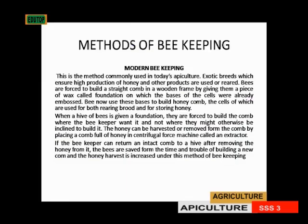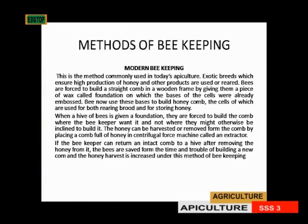In contrast, the traditional method requires no conditioning — bees are simply left in their natural habitat until honey is ready to be harvested. In the modern method, after the foundation is placed, the bees use these bases to build the honeycomb. The cells of the honeycomb are used for both rearing brood and for storing honey.